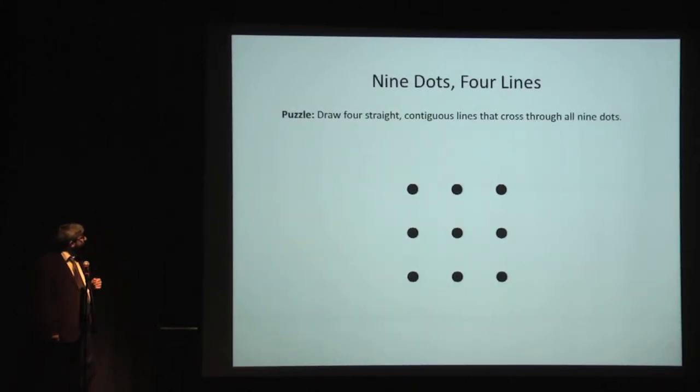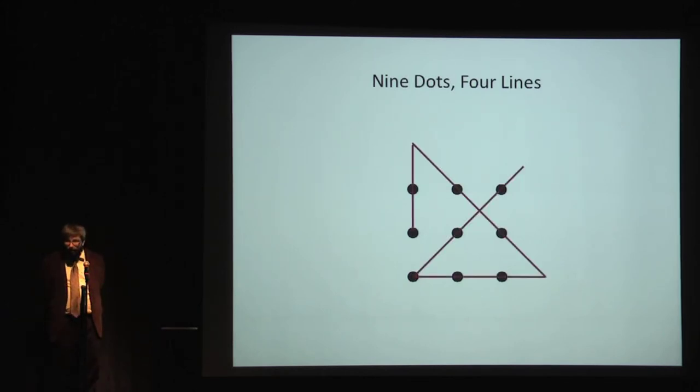This is the first puzzle. Draw four straight contiguous lines that cross through all nine dots. Contiguous means that the lines connect end to end, as if without lifting up the pencil. So I'll give you a moment to solve. I hope you're quick.